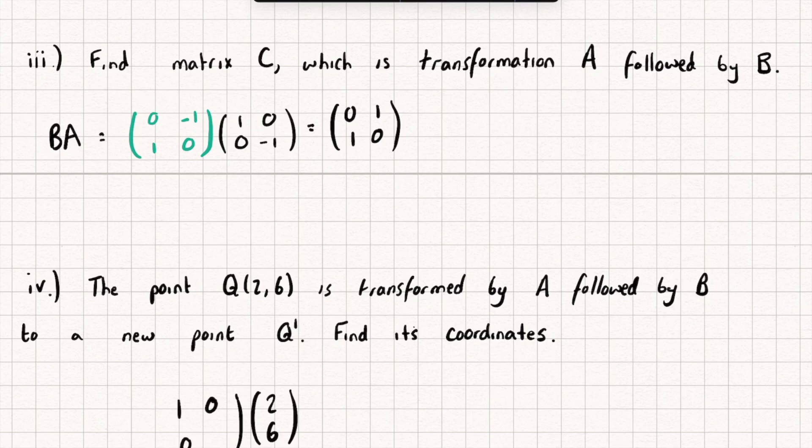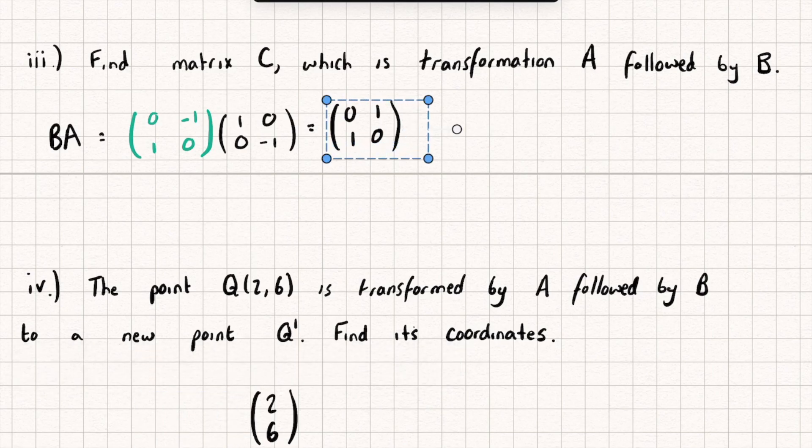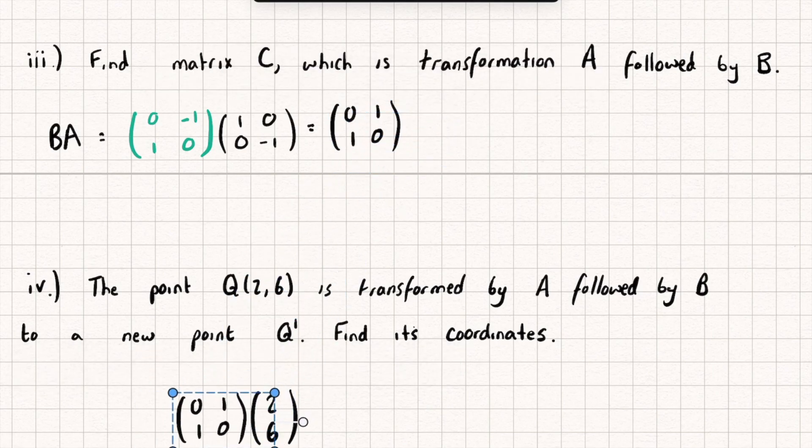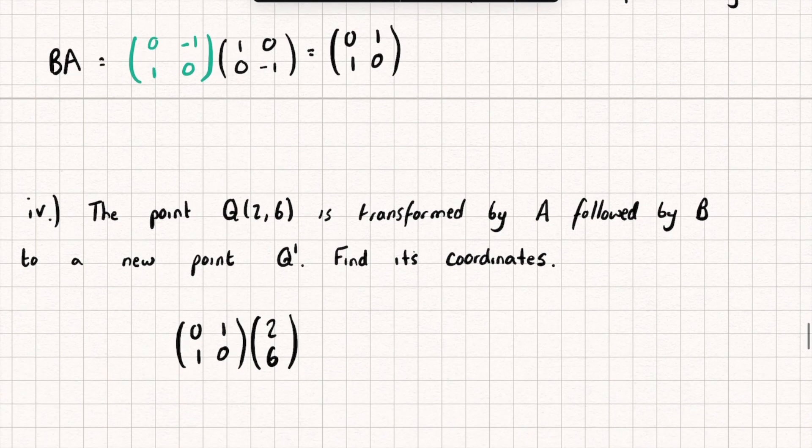which is (1, 0, 0, -1), get the answer and then multiply that by B. Or, the quicker way to do this would just be to get our new matrix and multiply it by the point Q and we get a new point, which has the coordinates (6, 2).